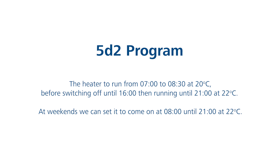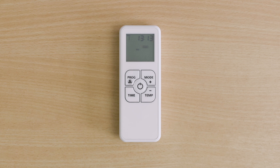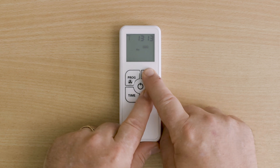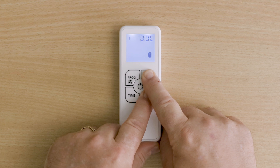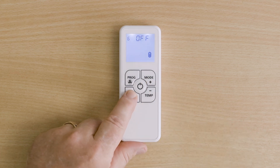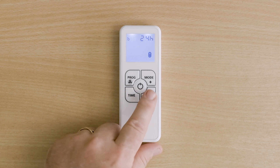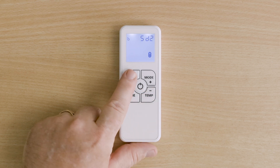The 5D2 program allows you to have one schedule for all weekdays and a different schedule for weekends. In this example, we program the weekdays for the heater to run from 0700 to 0830 at 20 degrees, before switching off until 1600, then running until 2100 at 22 degrees. As with the simple program, first go into the setup menu using mode and temp, select option B, and choose 5D2, then press program to return to the main display.